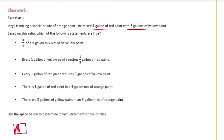For 1 gallon of red paint, he has 3 yellow paint. Statement A says 3/4 of a 4-gallon mix would be yellow paint — so it's saying 3 out of 4 would be yellow. And that's true. We can see 1, 2, 3 out of the 4 total gallons are yellow. So this is true.